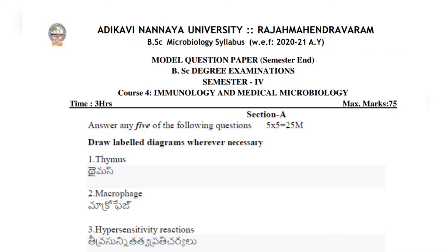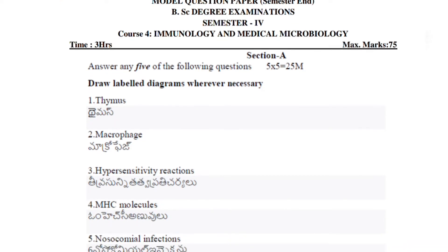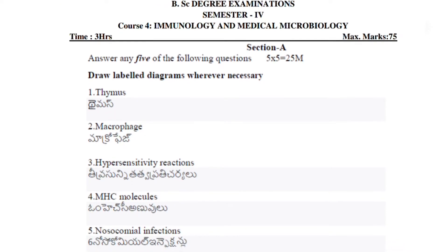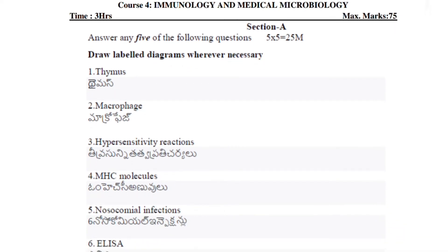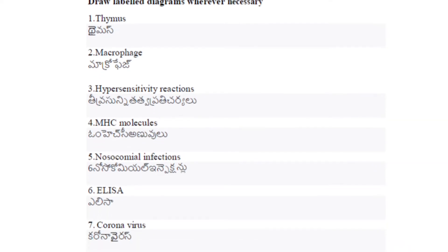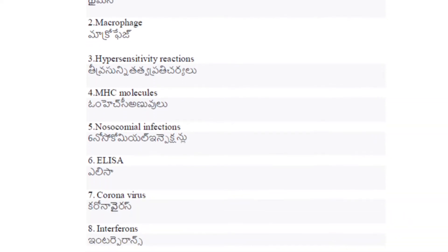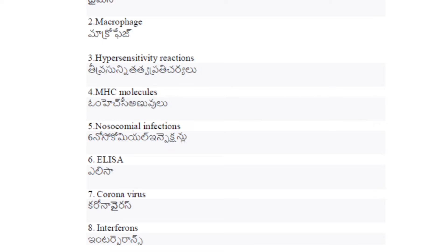So, the short questions: First — thymus. Second — macrophages. Third — hypersensitivity reactions. Fourth — MHC molecules. Fifth — nosocomial infections. Sixth — ELISA. Seventh — coronavirus. And eighth — interferons. These are the short questions.